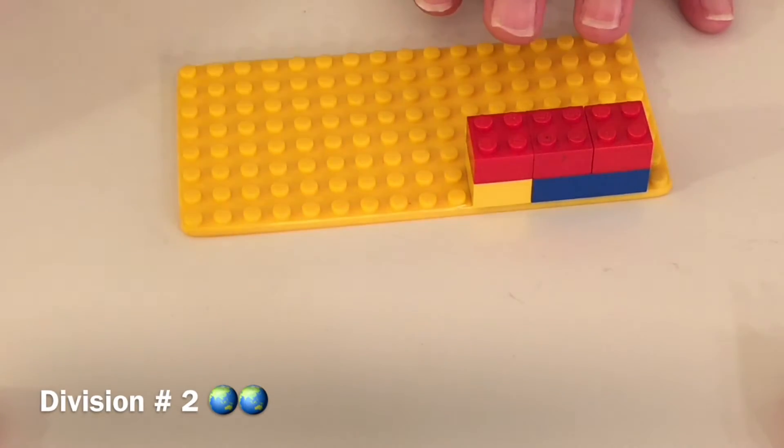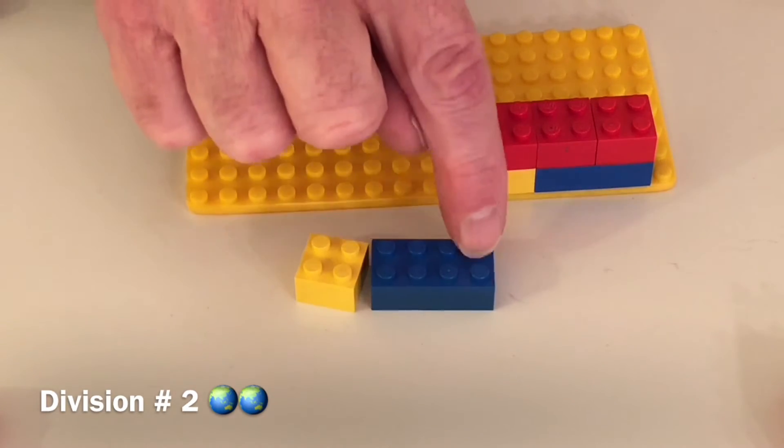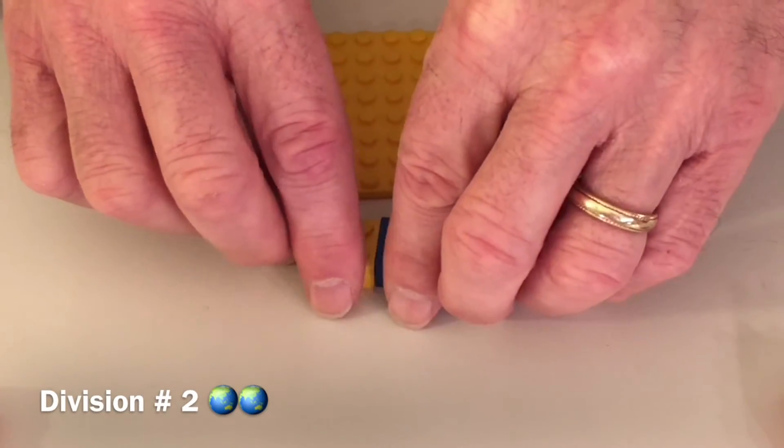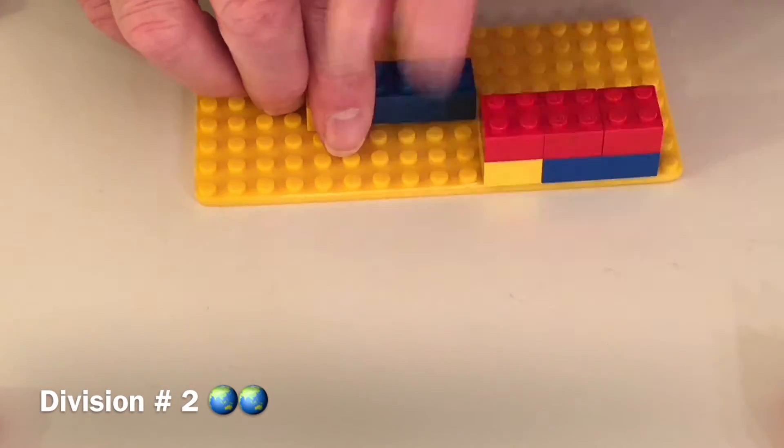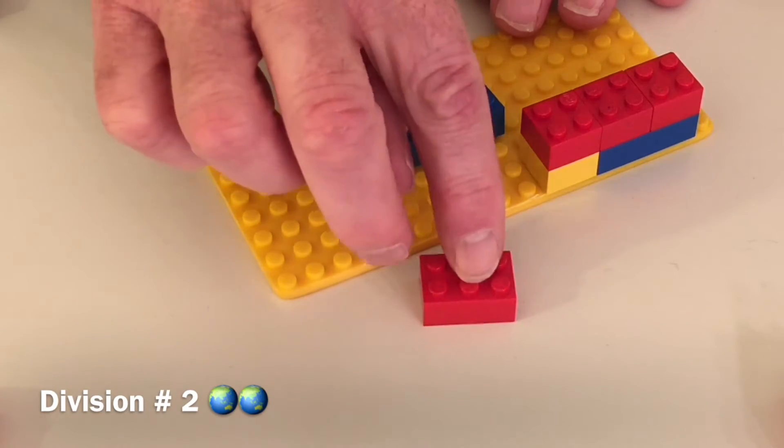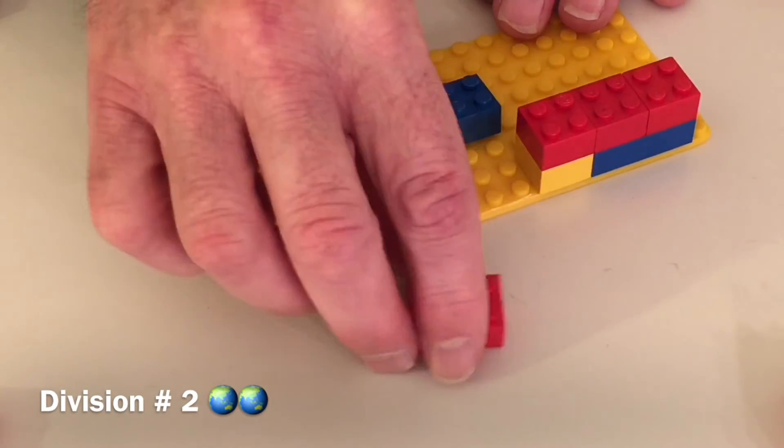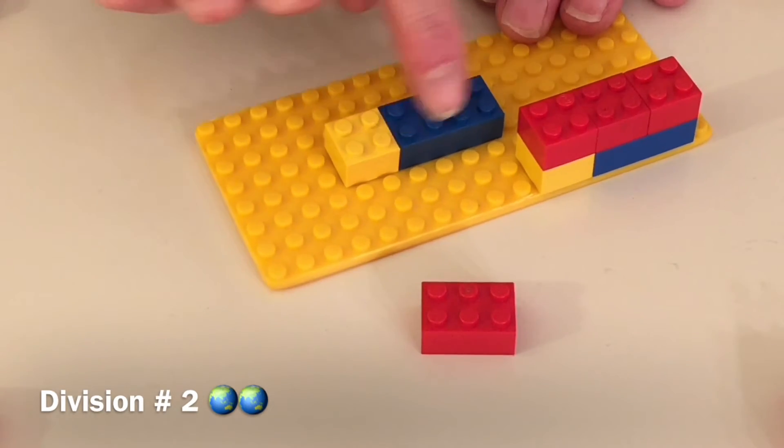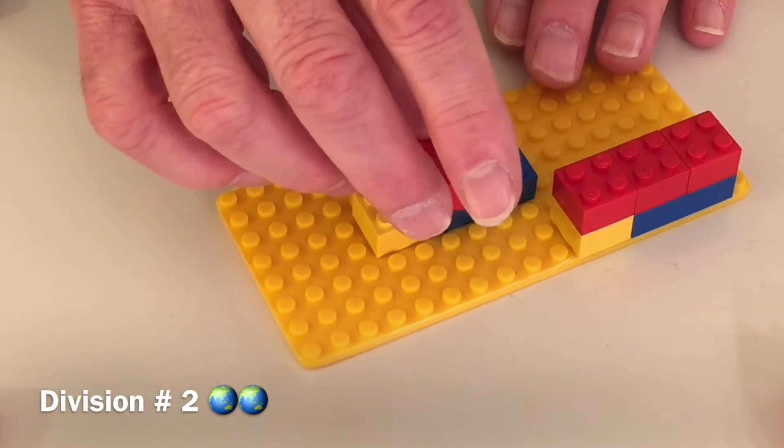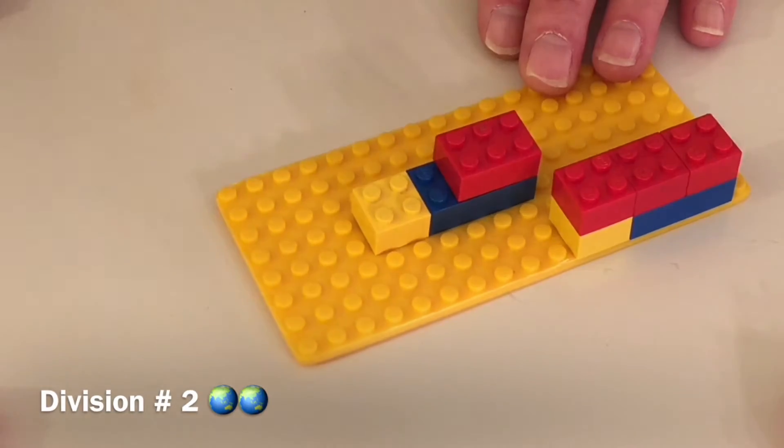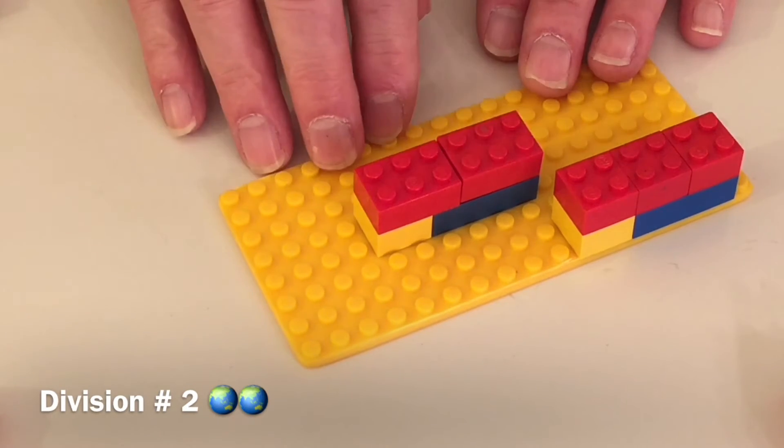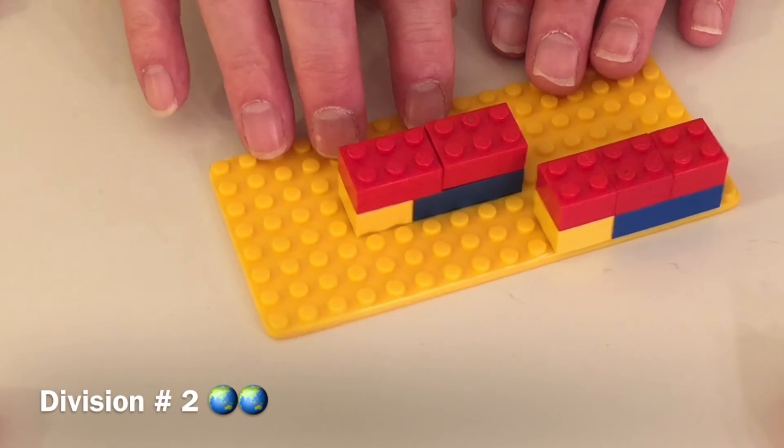Let's try another one with 12. Here's 12 again. 1, 2, 3, 4, 5, 6, 7, 8, 9, 10, 11, 12. How many 6-dot blocks will it take? Now 6-dot blocks are bigger than 4-dot blocks. So how many will it take to equal 12? How many 6s are there in 12? Well, let's try. There's 1. There's 2. So there are 2 sixes in 12. Nice work.